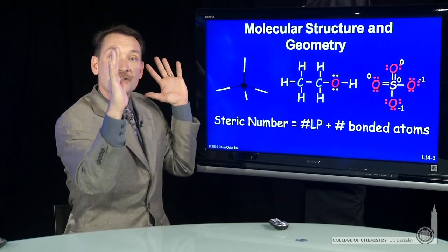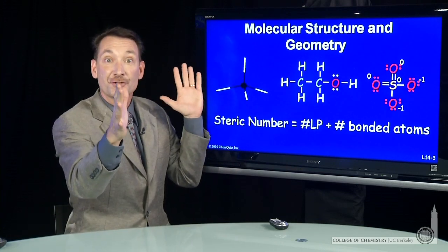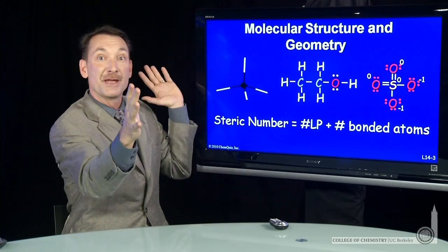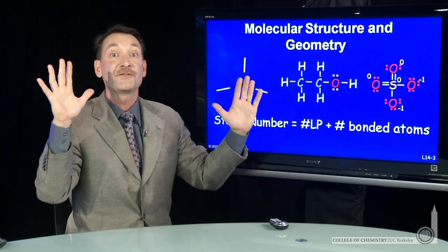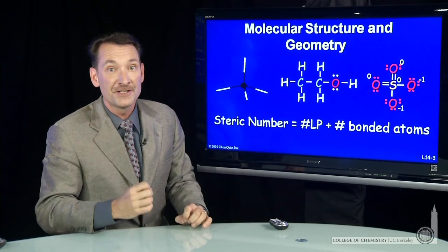And the third dimension is important because what the motivating factor for molecular structure and geometry is, is to get the pairs of electrons that are making the bonds and the lone pairs as far away from each other in space as possible. So you'll want to use all three dimensions to do that.